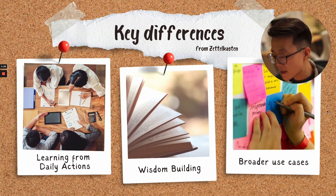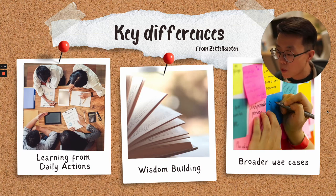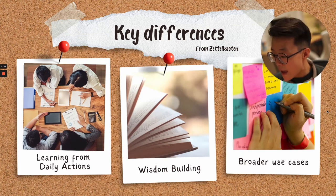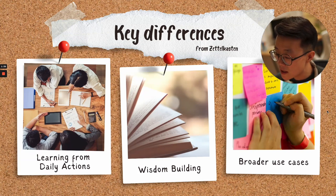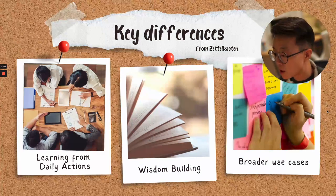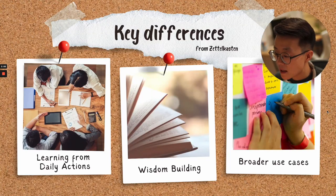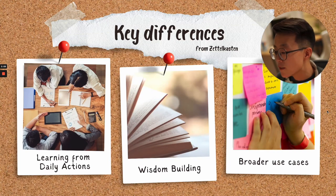The key differences from the Zettelkasten system is that Productive Thinking tries to leverage daily actions to make you a better person. This system is designed to help transform you as a person — not only to record your knowledge. As you use this system, you should become a better person with a better understanding about the world and about the things you do every single day. And last but not least, this system is designed for broader use cases, not only for scholars.